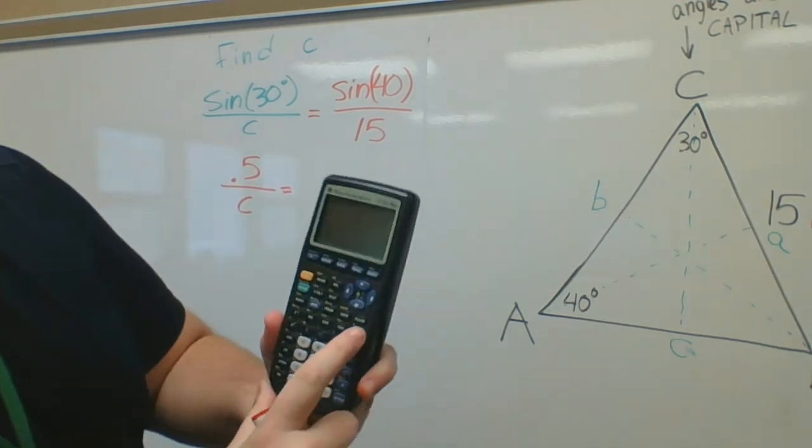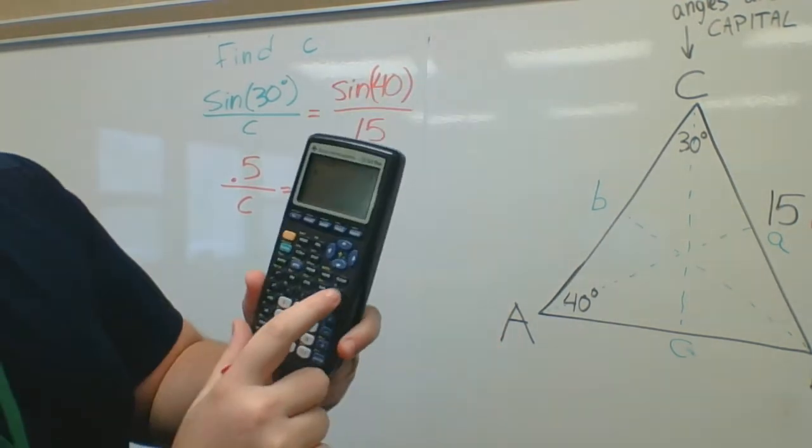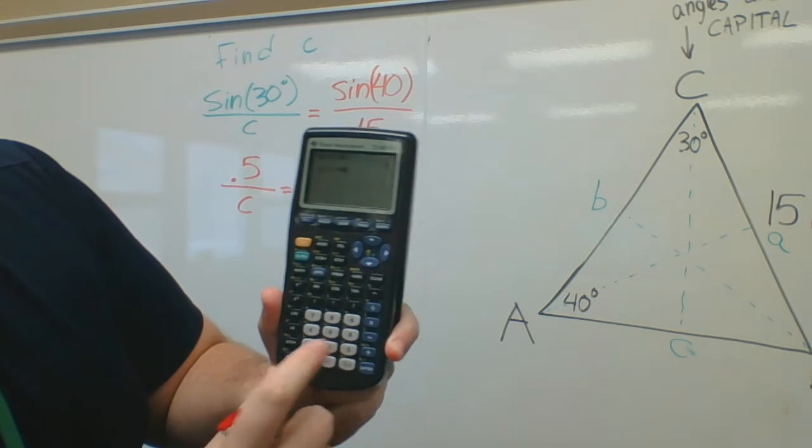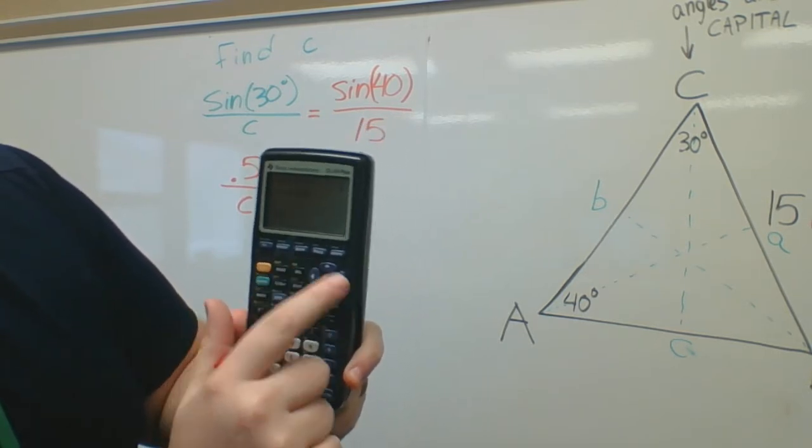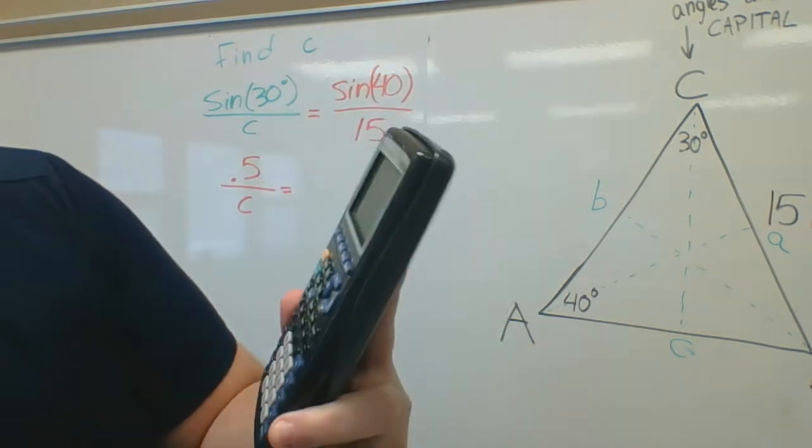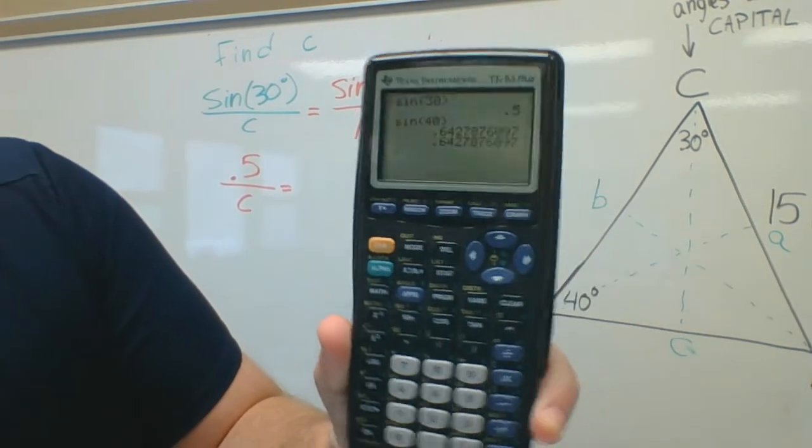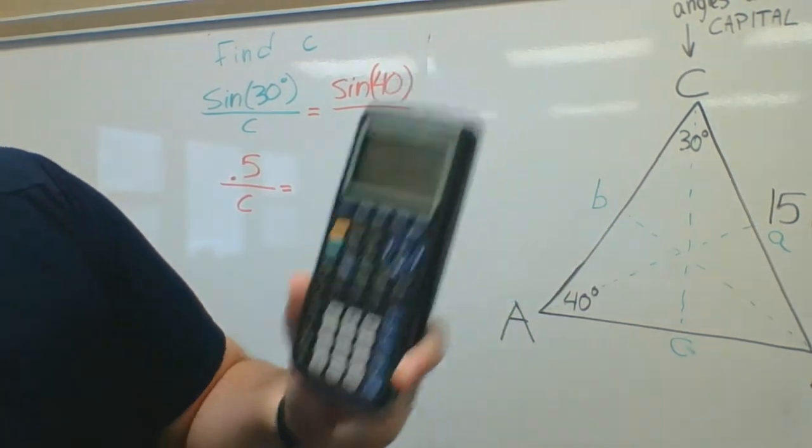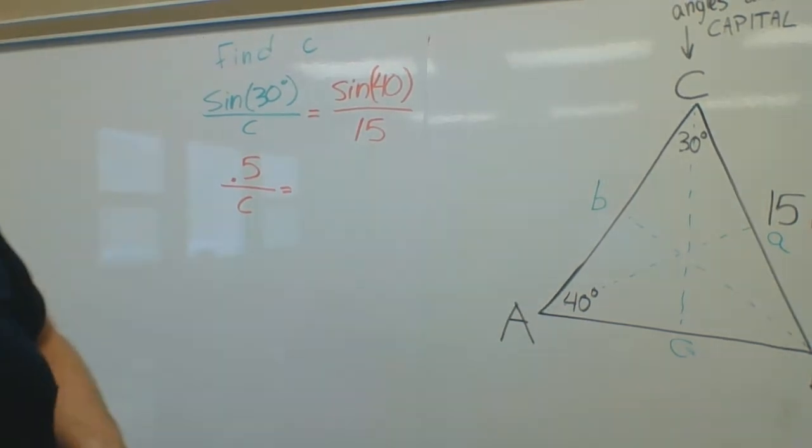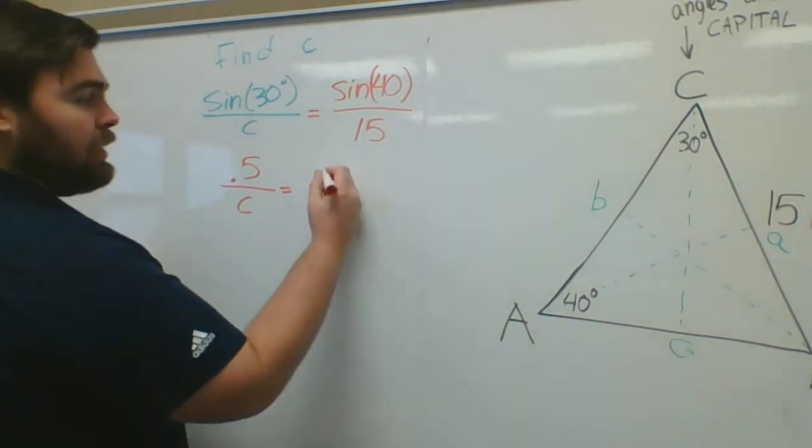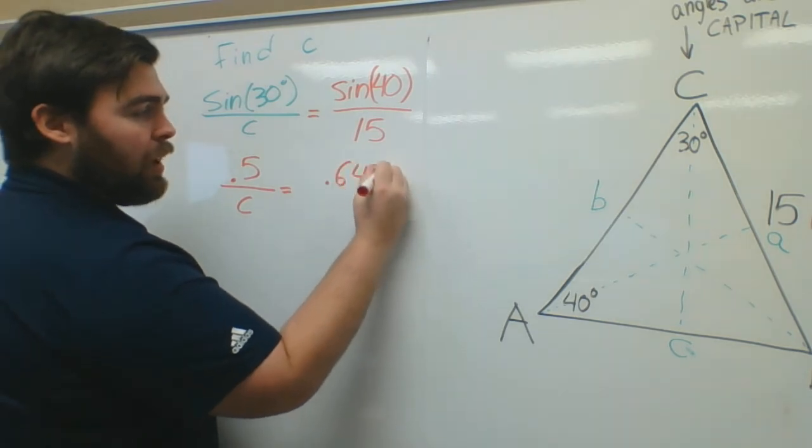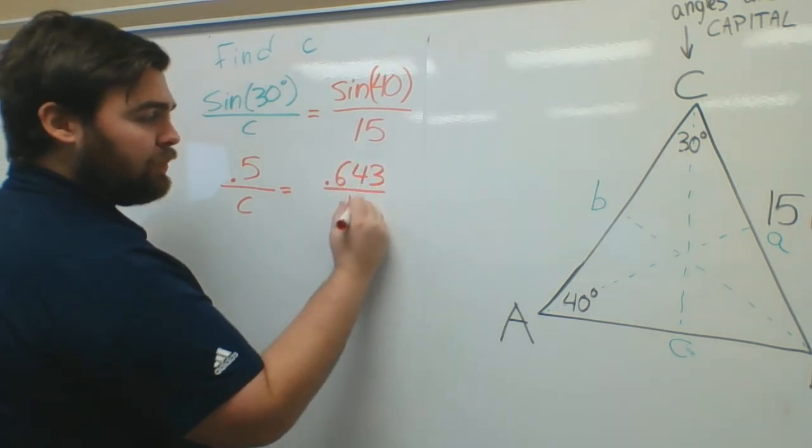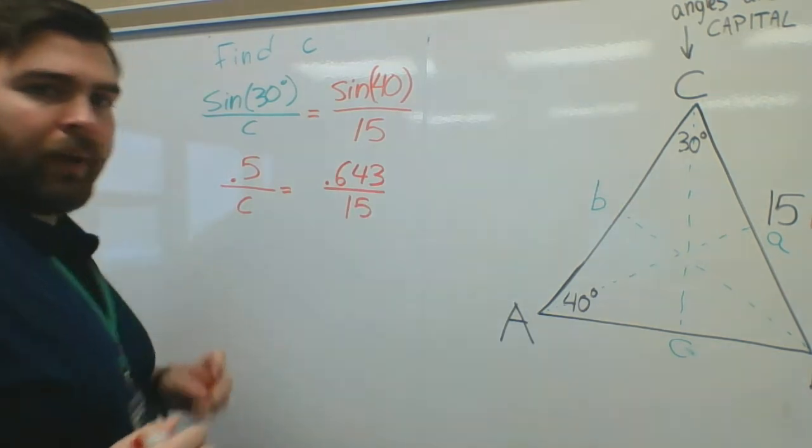So I'm going to get 0.5 over C is equal to sine of 40 over 15. So now I'm going to find out what sine of 40 is. So sine of 40, plug it in, and I get 0.643. You can round it. So I'm going to say sine of 40, that's 0.643, over 15.